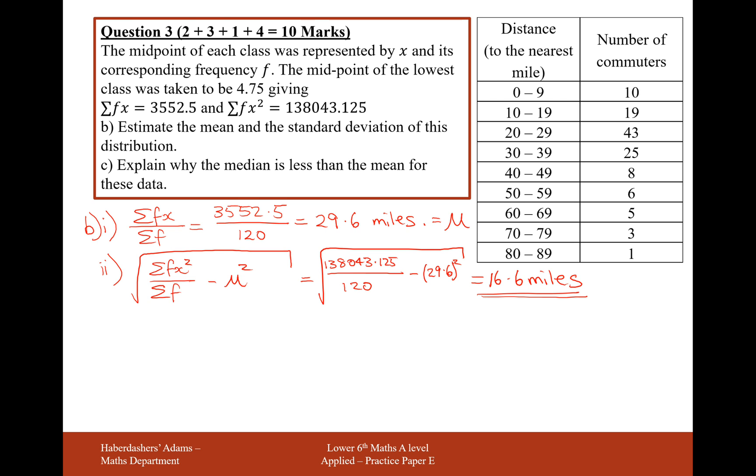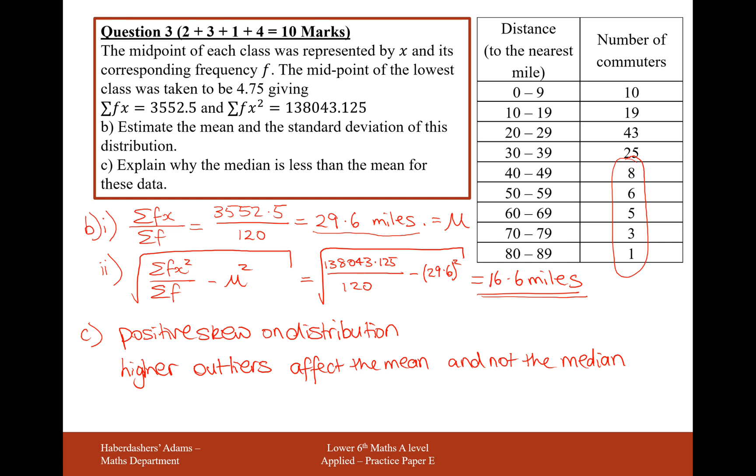Part C, explain why the median is less than the mean for this data. The mean was 29.6. The median was 26.7. This is probably explained by this high tail here. So either one or two comments here. We have a positive skew on our distribution. And that will affect its clustering up towards the smaller values on our distribution. Or we can say that the higher outliers affect the mean and not the median. The median here is just going to represent the middle value rather than taking all of these points into account.